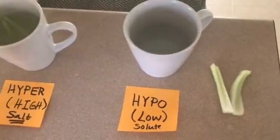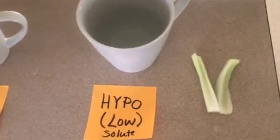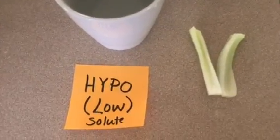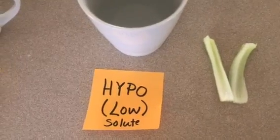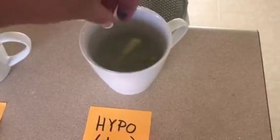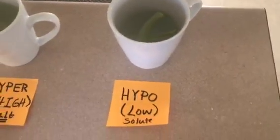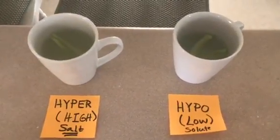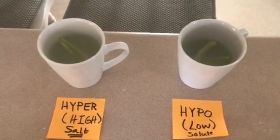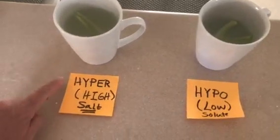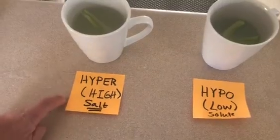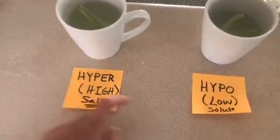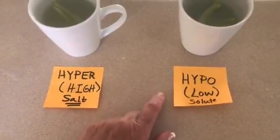This solution is just plain water. It is referred to as hypotonic because it has low salt or solute compared to the celery. Pure water has less salt than the celery. So I'm going to put these in the pure water or hypotonic solution, and over time we'll see what the effect is on these cells and their tissues based on being in either a hypertonic or high salt solution, or hypotonic low salt solution.